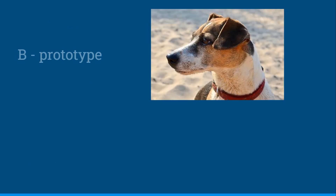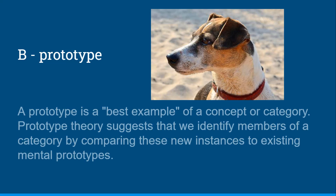And this would be B, a prototype. A prototype is a best example of a concept or category. Prototype theory suggests that we identify members of a category by comparing new instances to existing mental prototypes.